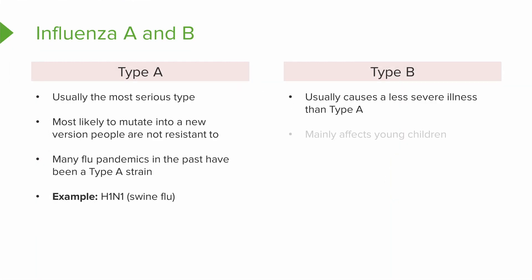Type B is usually a little less severe illness than type A, and it mainly affects young children. So pause and spend a little bit of time here — make sure you're clear on the difference between type A and type B. Do you remember an example of type A? Make sure you're solid on that before you move forward with the rest of the video.